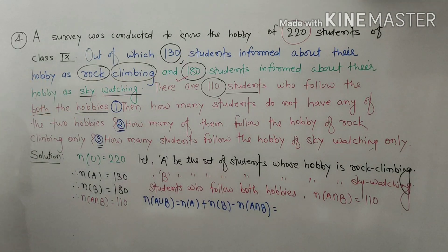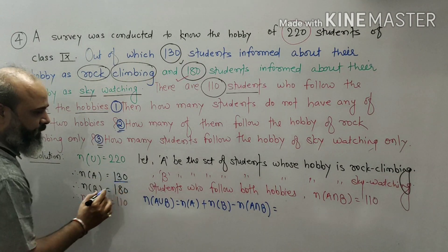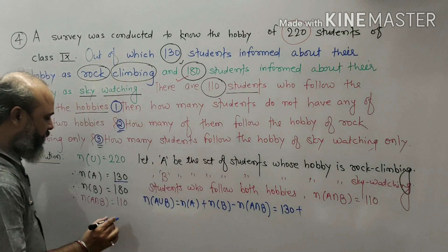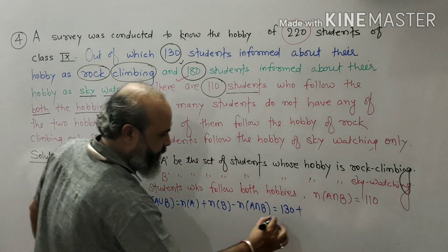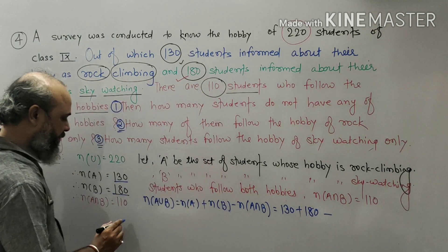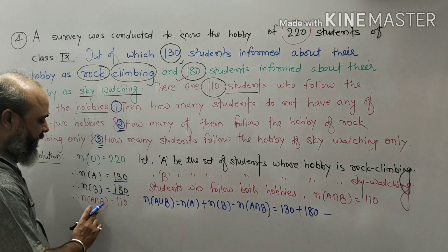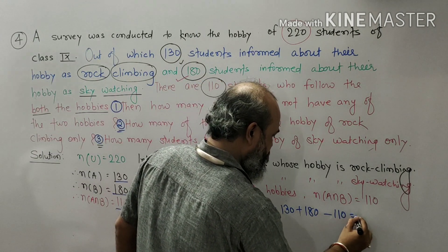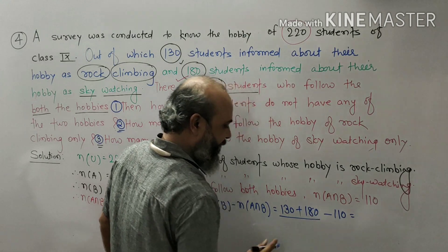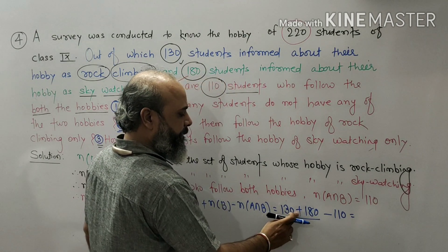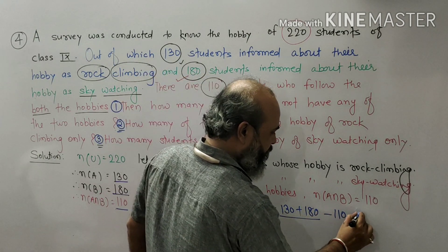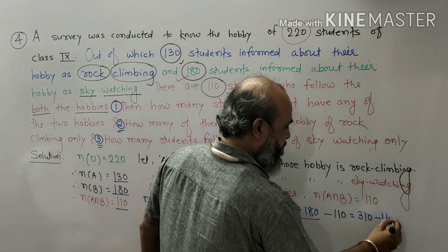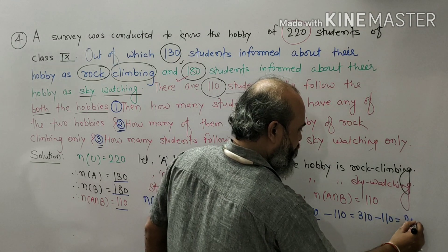Number of A is 130, plus number of B which is 180, minus number of A intersection B which is 110. So 130 plus 180 is 310, and 310 minus 110 equals 200.